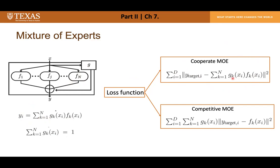Each expert is trained to either cooperate or compete to produce the output based on a loss function. In cooperative MoE, local experts contribute linearly — each learns to eliminate residual errors left by others. In competitive MoE, each expert produces the whole output and responds only to a subset of the data, unaffected by other experts' weights. This is useful when we know in advance that the training data naturally classifies into distinct expert categories.